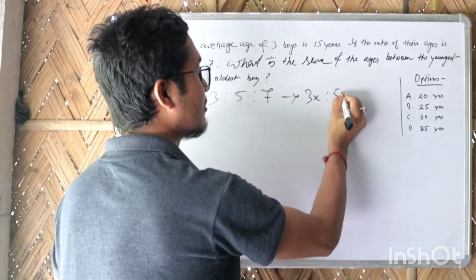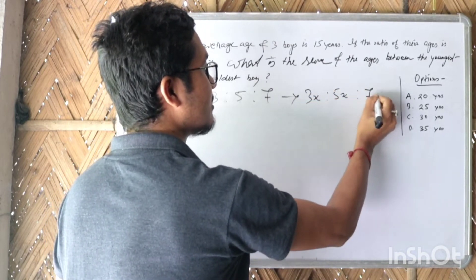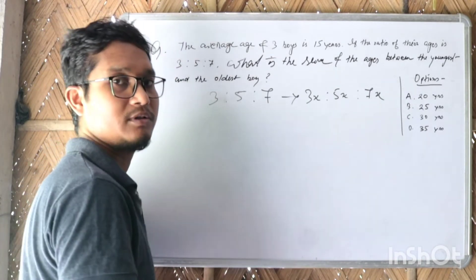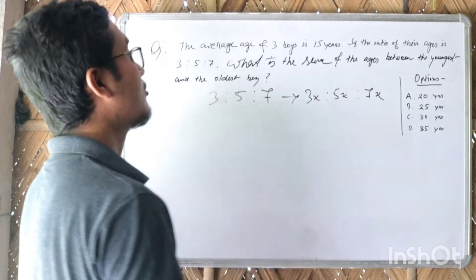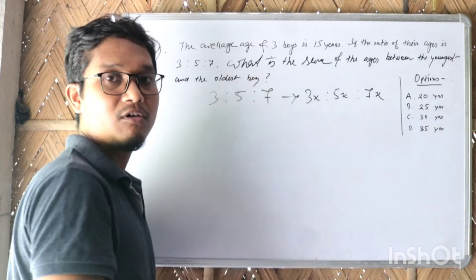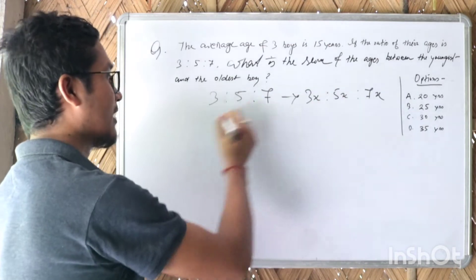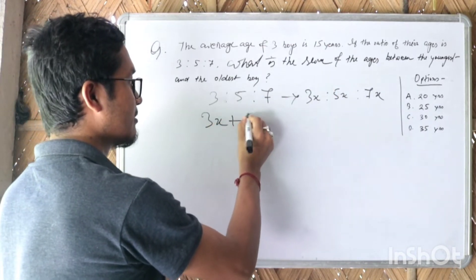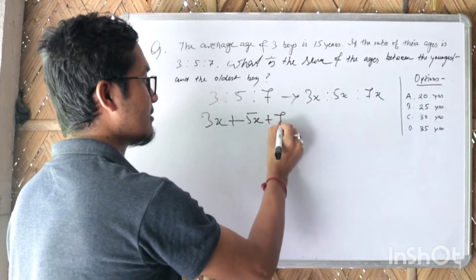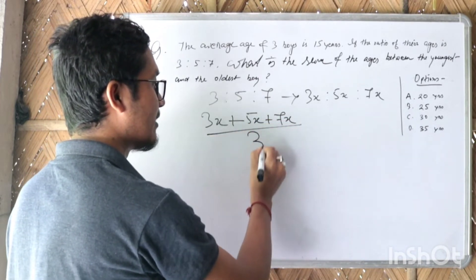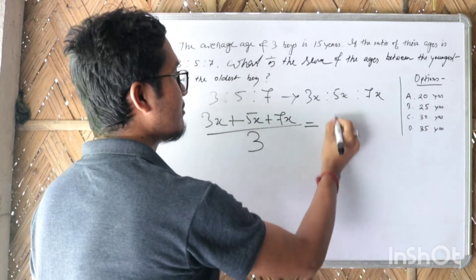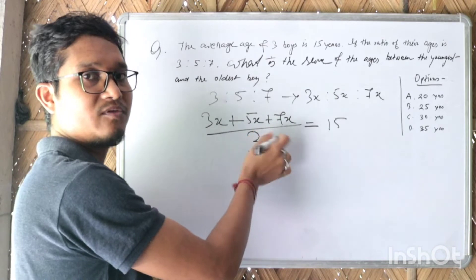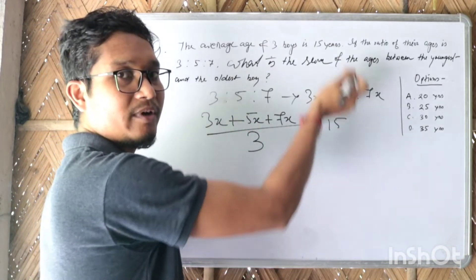We have 3x, 5x, 7x. The sum divided by 3 equals 15 years. So 3x plus 5x plus 7x all divided by 3 equals 15.